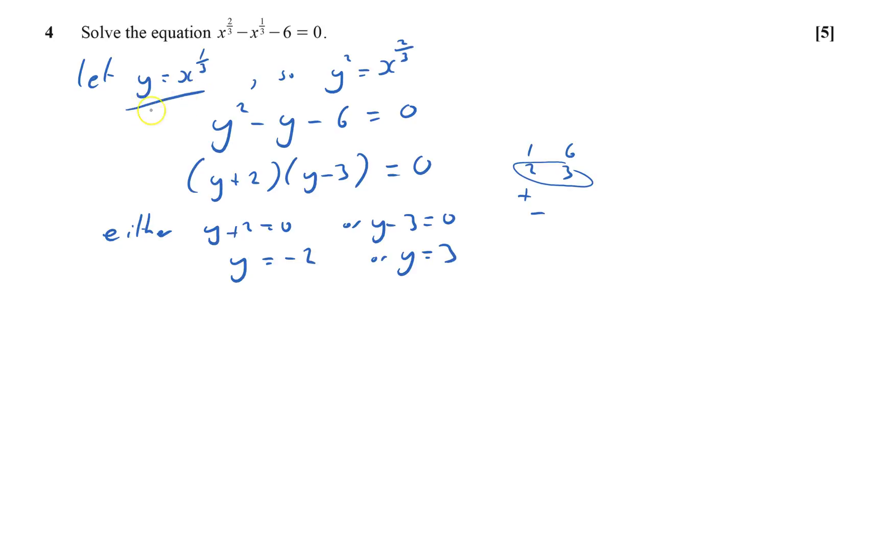But that's not what I had. I wanted it in terms of x because the equation was in x so I have to substitute that back. x to the power of a third is the same as a cube root of x. So this gives me cube root of x equals negative 2 or cube root of x equals 3.